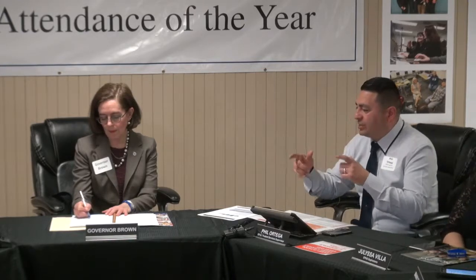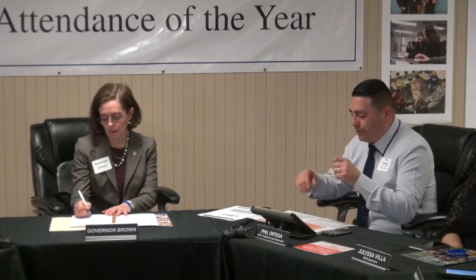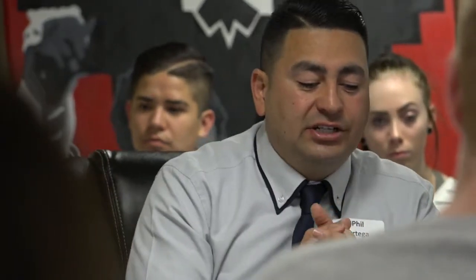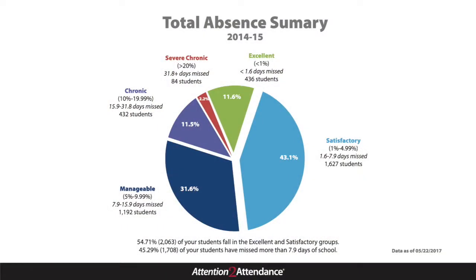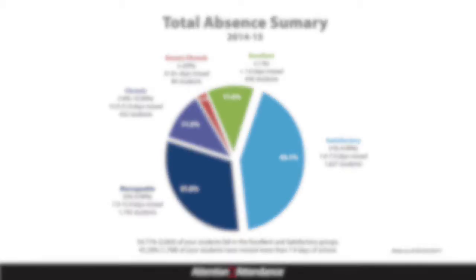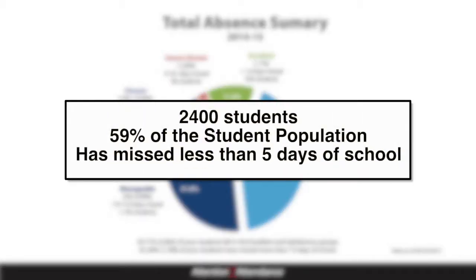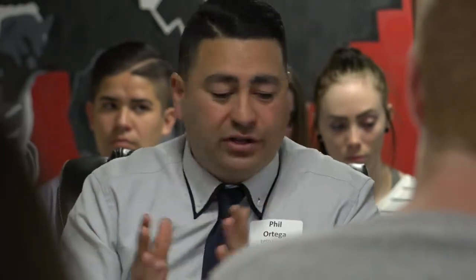Teaching staff that we have limited time with kids — making sure that we have our support staff and our student services staff informed to make every interaction with kids meaningful is really the core of what we do. Out of 4,090 kids in our district, 962 have perfect attendance. Combined, we have 2,400 students, and that's 59% of our student population that have missed less than five days of school, which is unparalleled. There's no other district in Southern Oregon that I know of that has that kind of data.